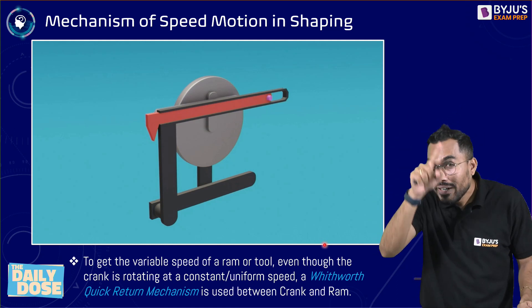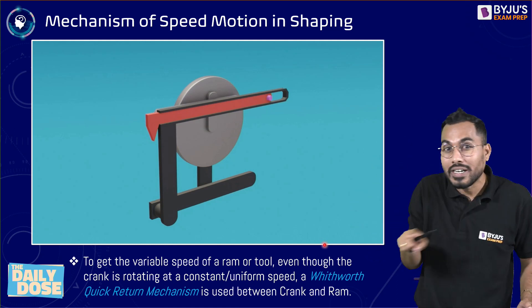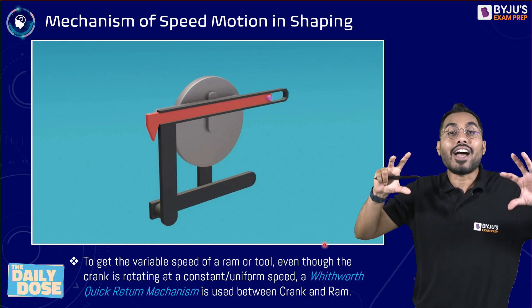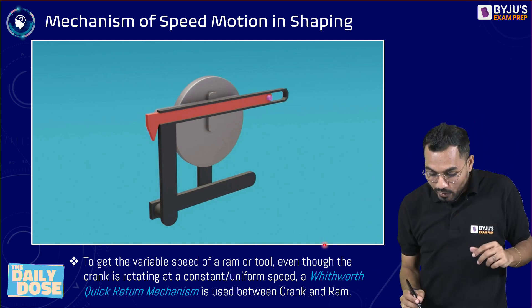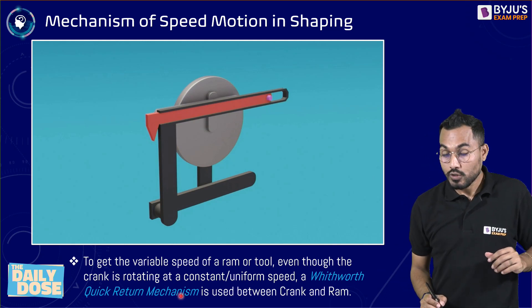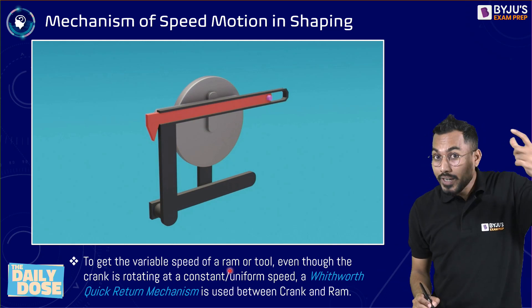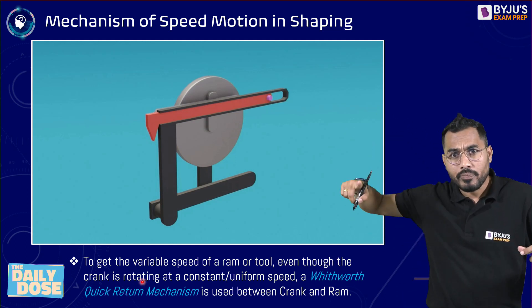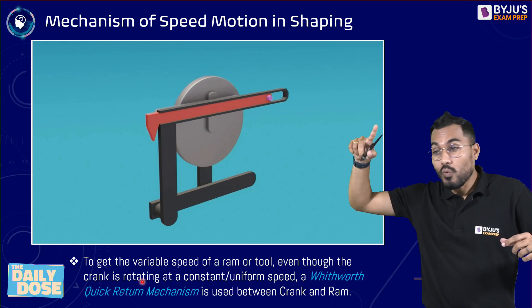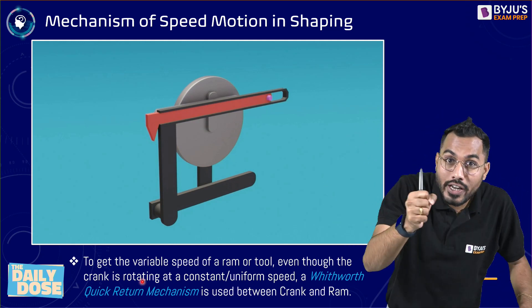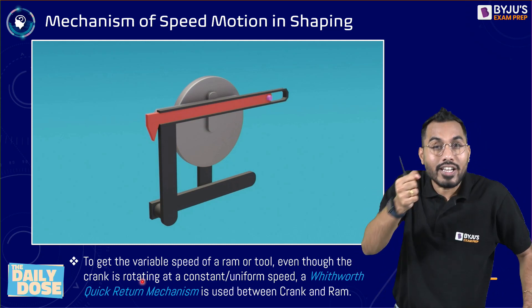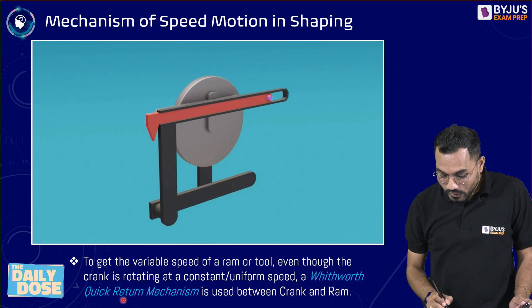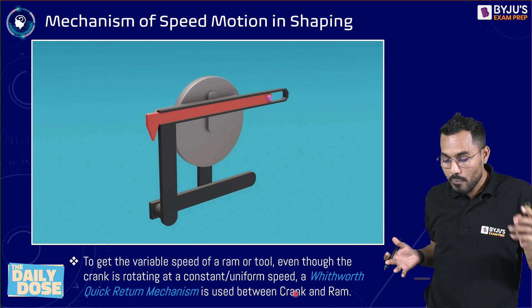Since there is no machining during the return stroke, the tool should return with a faster velocity to save machining time. In one complete crank rotation, the forward velocity of the tool should be optimum, but the return velocity should be high. This is achieved by a mechanism called the Whitworth Quick Return Motion Mechanism. Even though the crank rotates at constant RPM, the tool moves at optimum velocity in the forward stroke and high velocity in the return stroke.